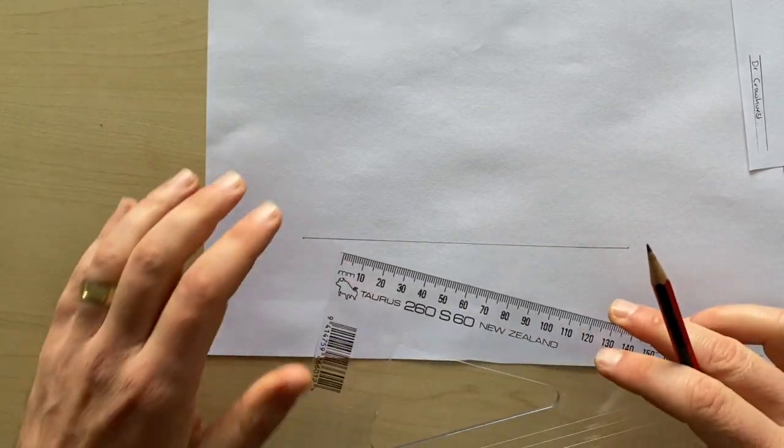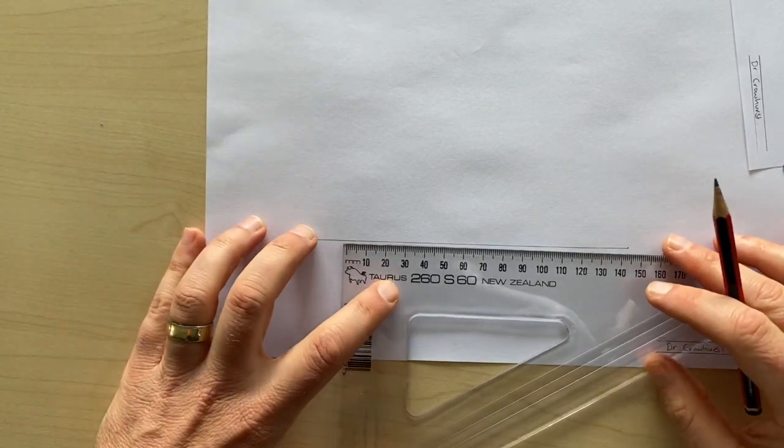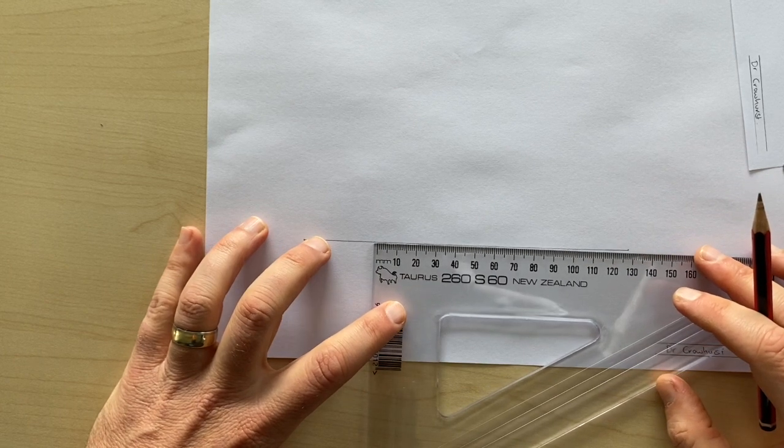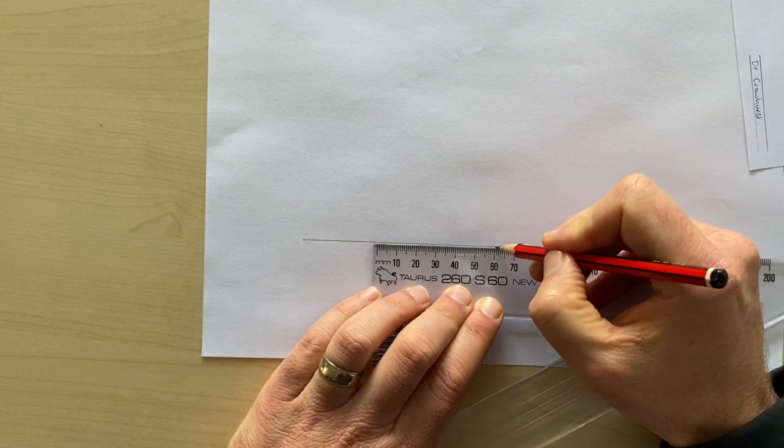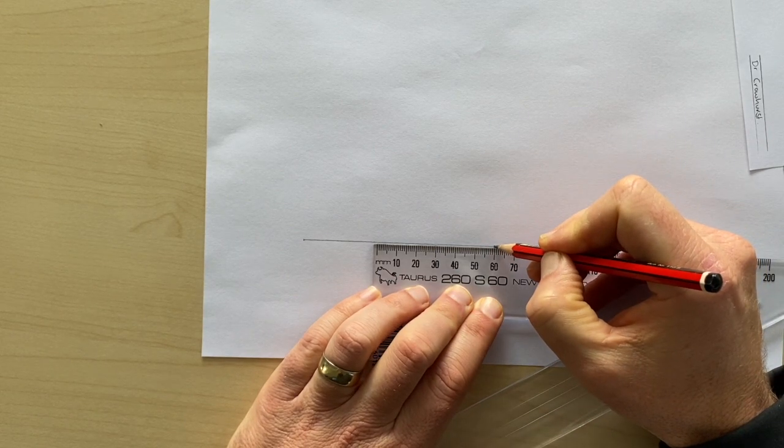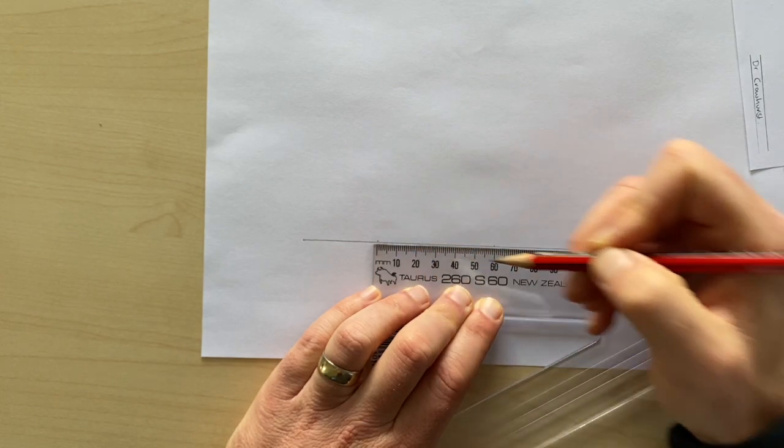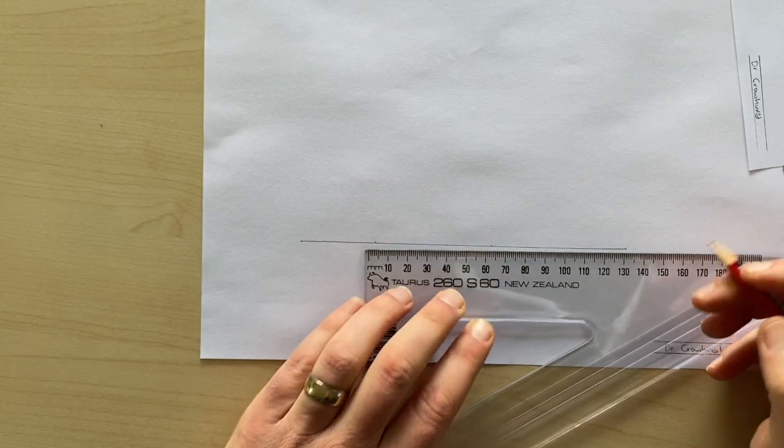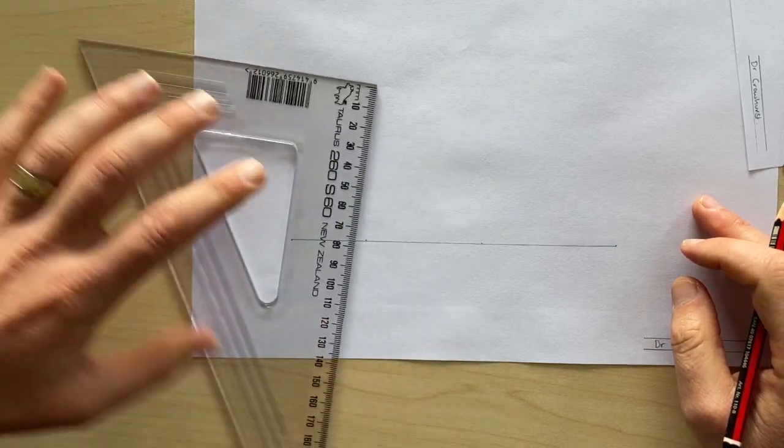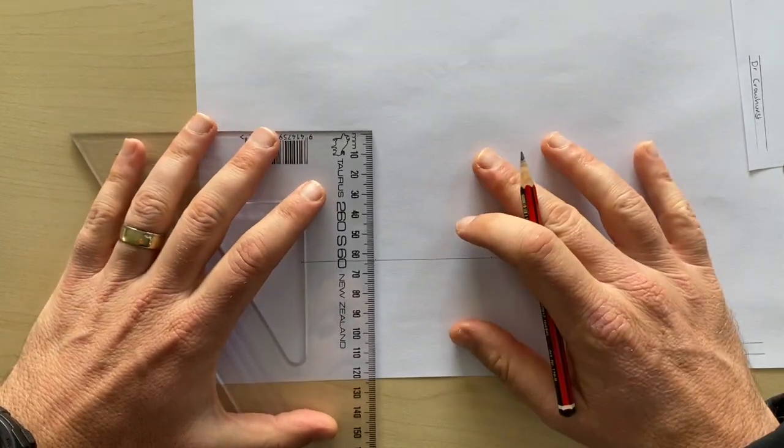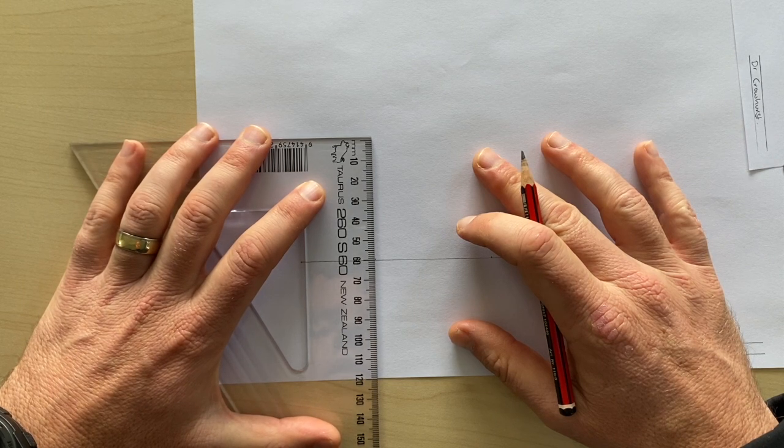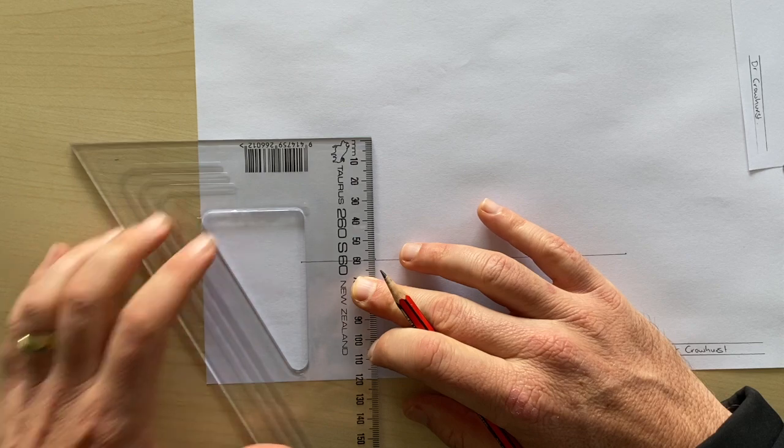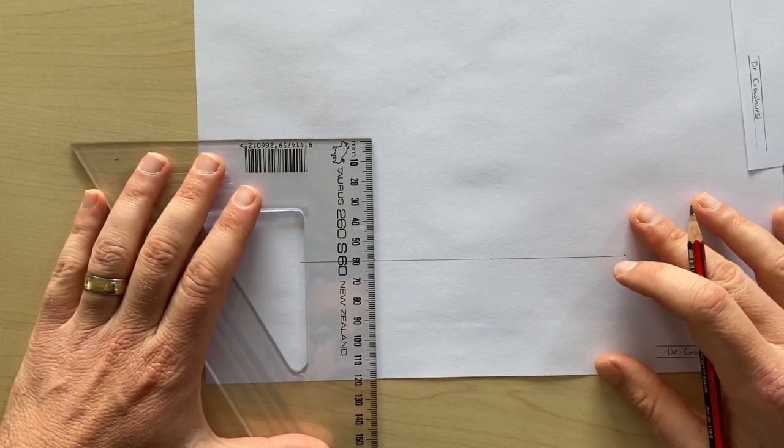So you're going to use that line as the base of your cube, and with oblique we always start by drawing the front face. This cube is going to have edges of six centimeters. So I'm going to mark six centimeters or 60 millimeters there and there. Then I'm going to draw a couple of parallel lines and I'm just making sure that they are parallel.